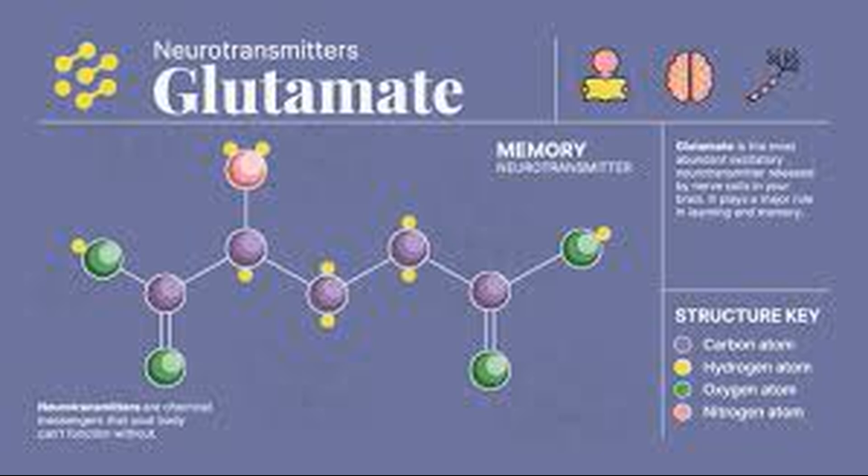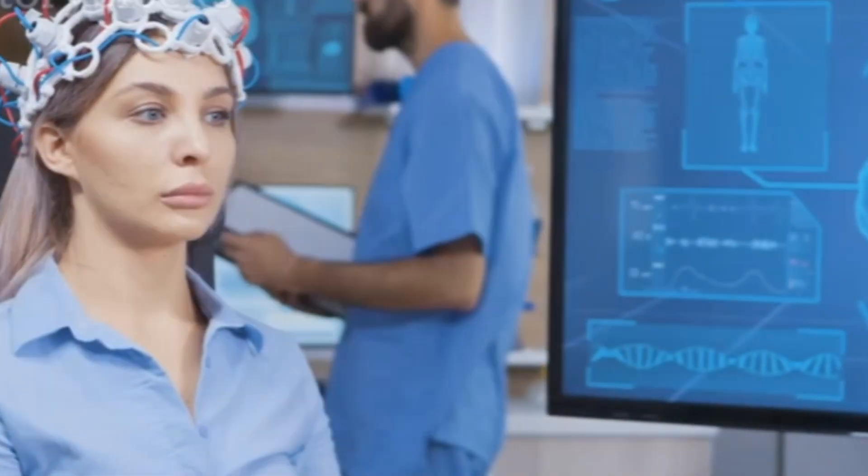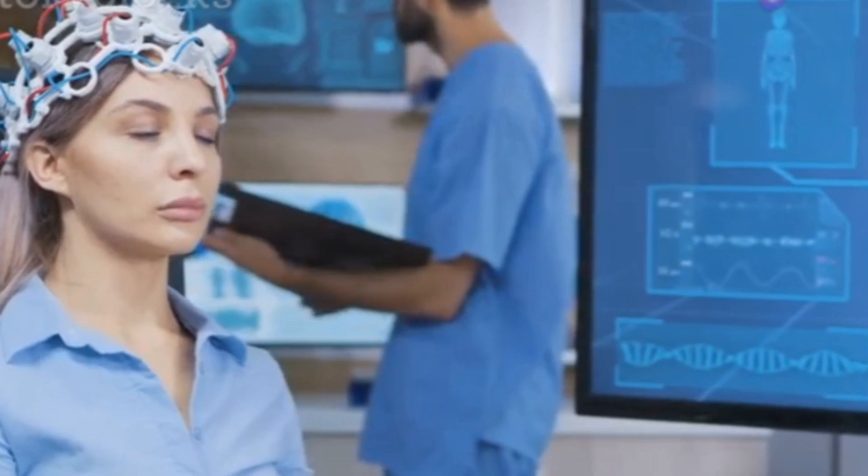Glutamate is the most abundant excitatory neurotransmitter in the brain. It plays a crucial role in synaptic plasticity, learning, and memory. Almost every neuron in the brain uses glutamate to transmit signals.